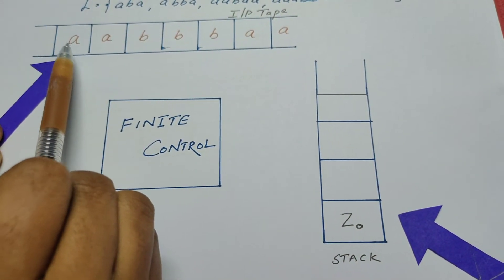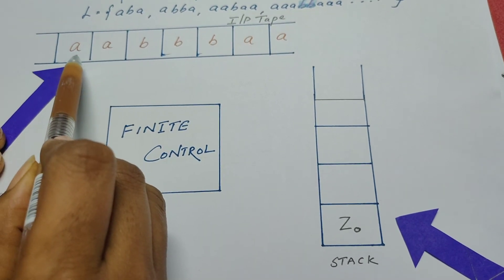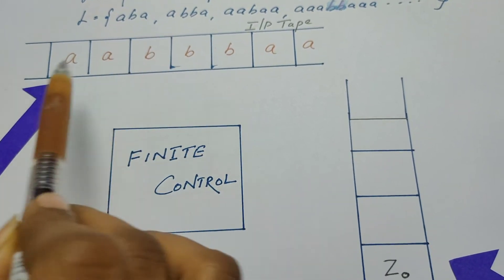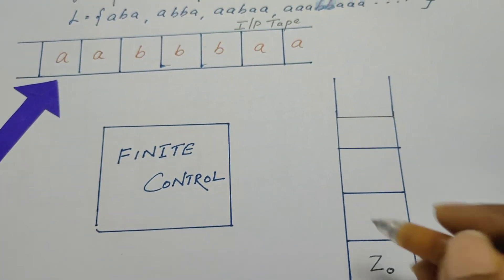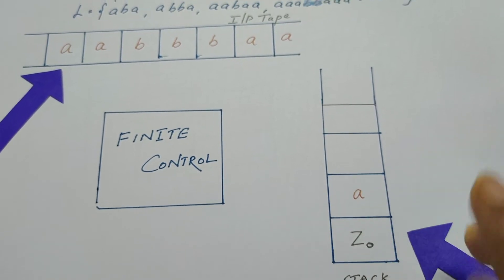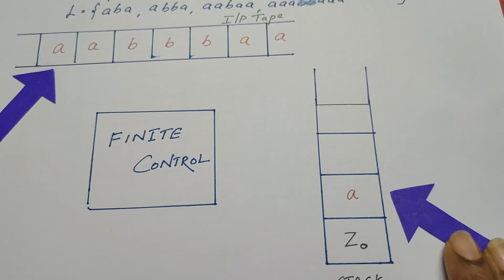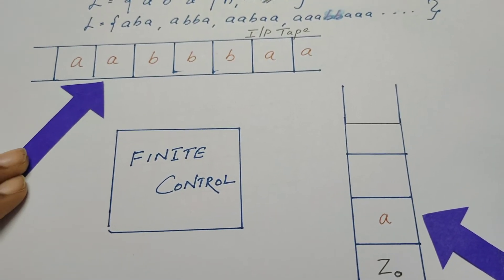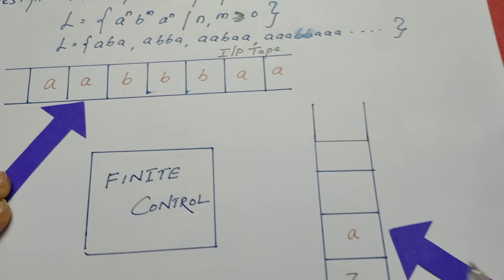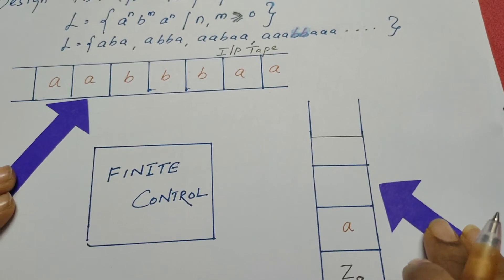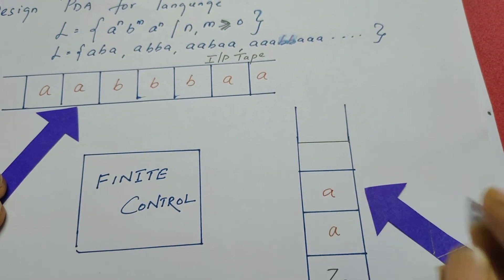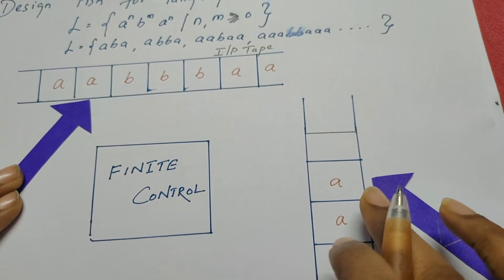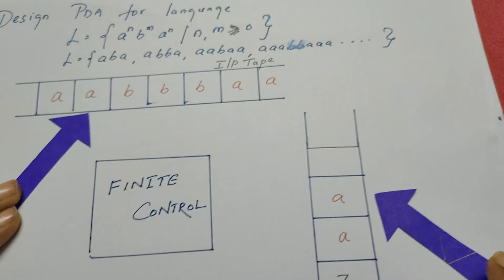When it reads a, the pushdown automata reads the input tape from left to right. When it reads a, that a is pushed down onto the stack. The read-write head then moves to the next symbol. When it reads the second a, another a is pushed onto the top of the stack. So two a's have been read and correspondingly two a's are pushed onto the stack.